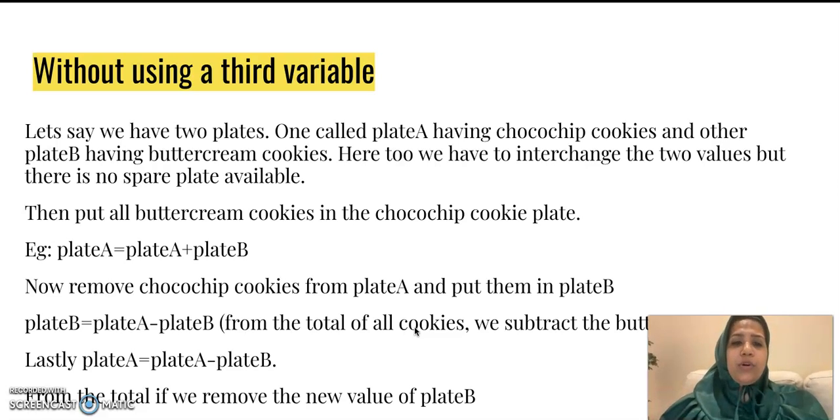First of all, let's put the buttercream cookies from plate B also into plate A. So now plate A is having chocolate chip as well as buttercream cookies. Since they are cookies, we are not scared that they will be mixed up. So plate A has both the variety of cookies right now. Next, we remove the chocolate chip cookies from plate A and put them into plate B.